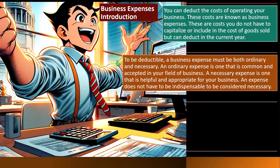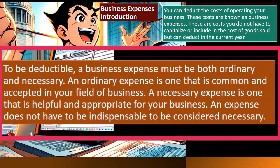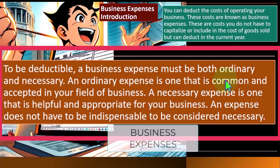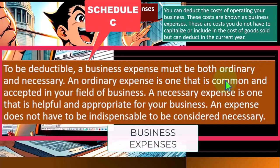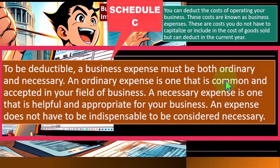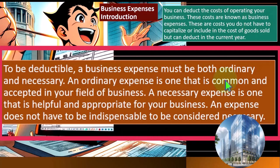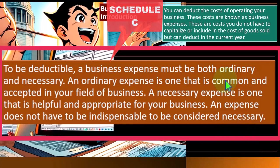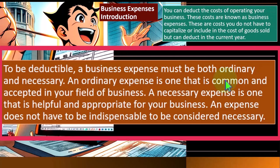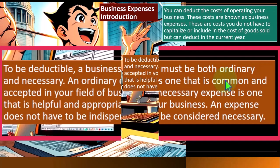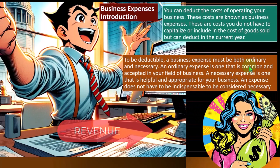To be deductible, a business expense must be both ordinary and necessary. This gets a little messy because we have to keep business expenses separate from personal expenses, remembering that the Schedule C isn't a separate legal entity the way a corporation is. A corporation is a separate legal entity with liability protections. But from a bookkeeping standpoint, both are treated the same — we want them accounted for separately so we can determine what was necessary to generate revenue versus what is personal.